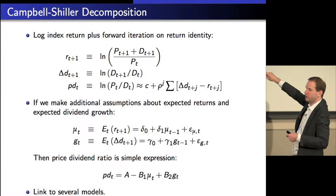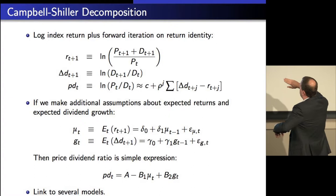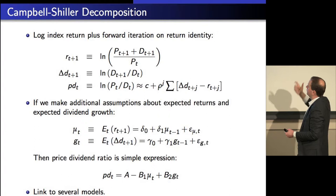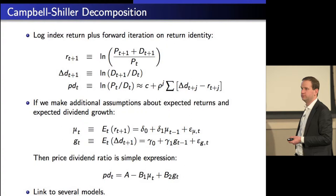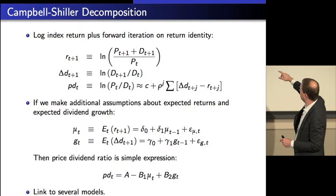What does the price-dividend ratio tell us? If it's high or low, it must tell us something. If it's high, that either growth is high or discount rates are low, and vice versa. So we can at least learn something about these future quantities. This representation doesn't tell us anything about over what horizon we're talking — could this be over a 15-year horizon or over the next one year? All these terms are in there, so that's important.